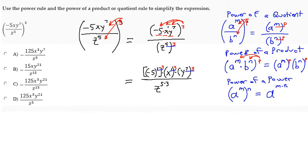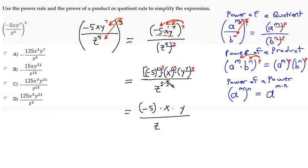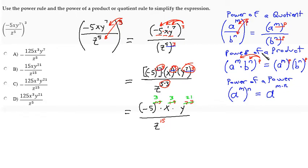Doing all of this in the next step: negative five in parentheses, x coming out of the parentheses, y coming out of the parentheses in the numerator, and z in the denominator with 5 times 3 equals 15. Inside each numerator factor: 1 times 3 on the negative five, 1 times 3 on the x, and 7 times 3 on the y — giving 3, 3, and 21 respectively.